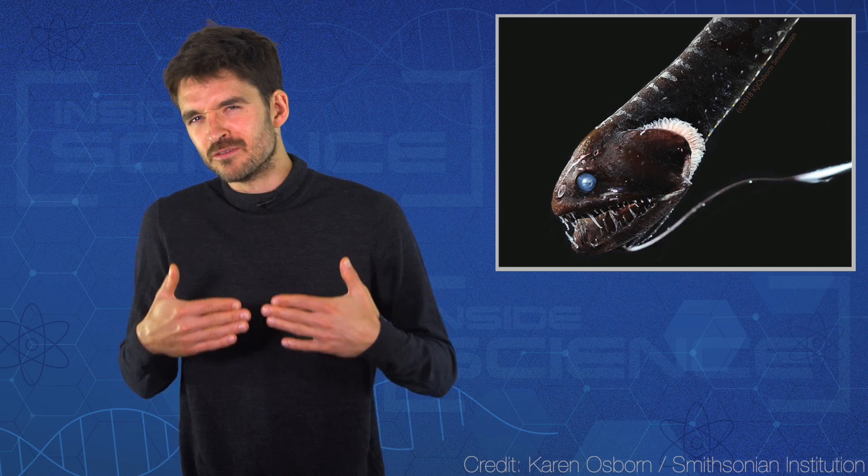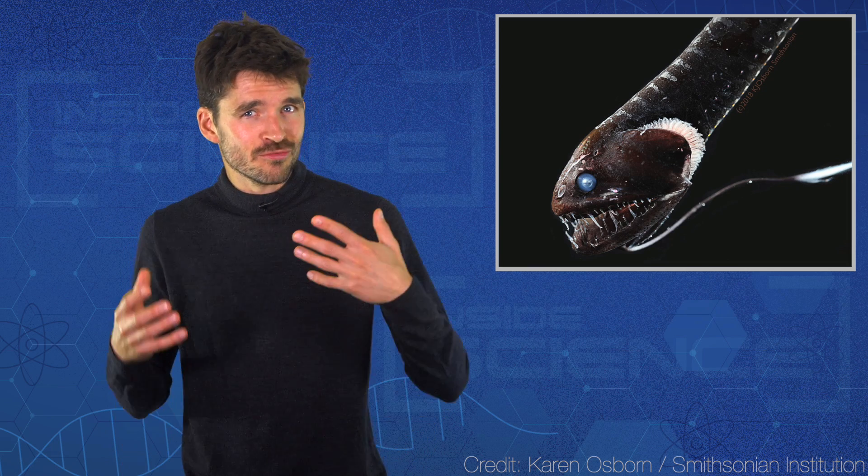But while these scientists were searching the sunlit shallows, another group of researchers were trawling the ocean depths. They were looking for fish that hide in the dark, specifically ultra black fish that reflect tiny amounts of visible light, less than 0.5% of what hits them. So how are these fish so black? Well the answer lies in their skin.